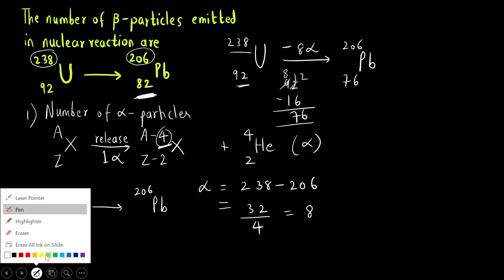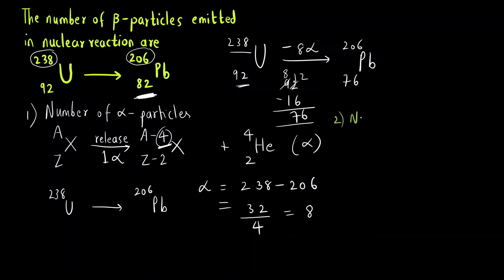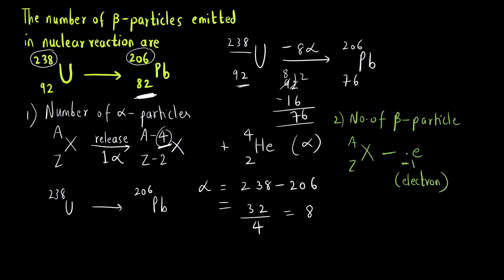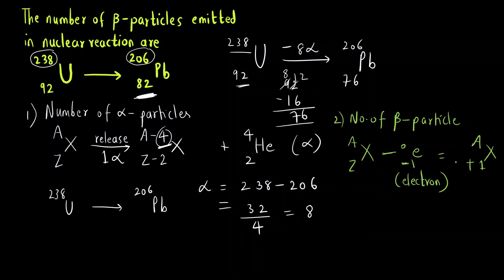Now we calculate the final answer: the number of beta particles. Suppose a neutral atom with atomic mass A and atomic number Z emits a beta particle. A beta particle is nothing but an electron, with charge minus 1 and mass 0. When a beta particle is emitted, the atomic mass remains the same and the atomic number increases by 1 unit.